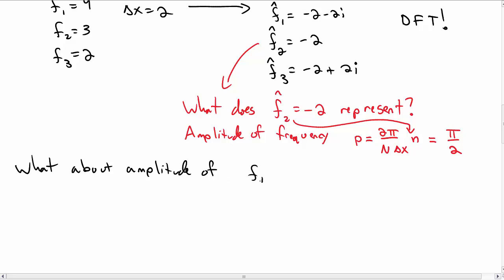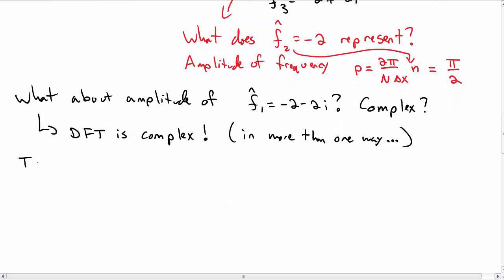So what about the amplitude of, say, f hat sub 1, which is minus 2 minus 2i? That's complex. And this is a general point, which is that the discrete Fourier transform is, in general, complex. And I mean that in more ways than one. So if we want to interpret the amplitude there, we obviously need to just take the absolute value. So let's take the absolute value of our amplitude, in particular the absolute value of f1, or that's f hat 1, f hat 1 star, square rooted. And you should get 2 square root of 2 there.